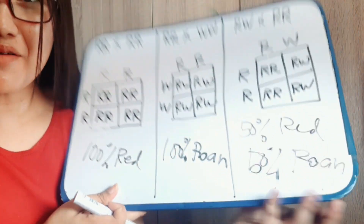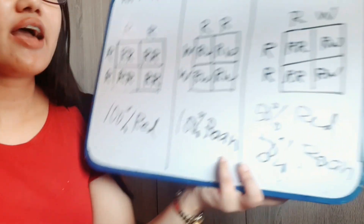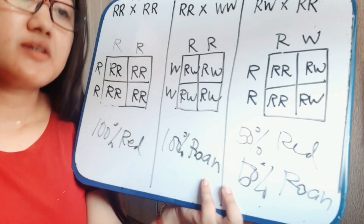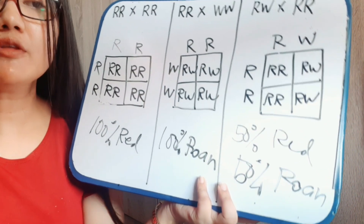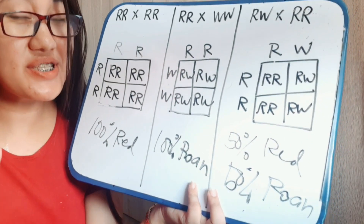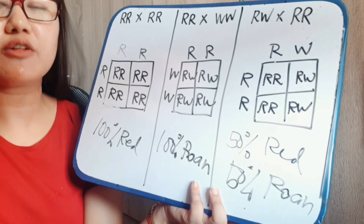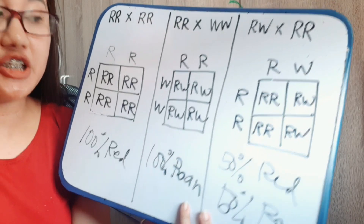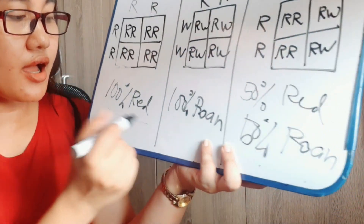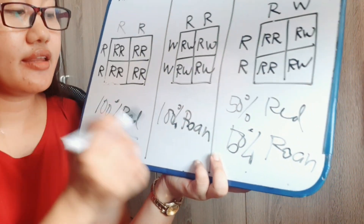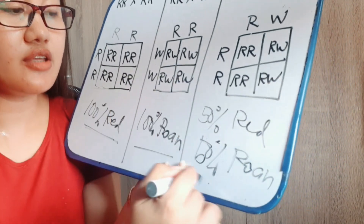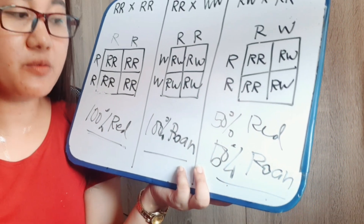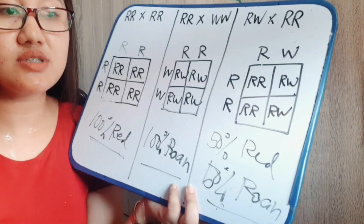From our answers in the activity: will you be able to trace the father of the calves? Of course, yes. The possible phenotypes are: problem one — 100% red; problem two — 100% roan; problem three — 50% red and 50% roan.